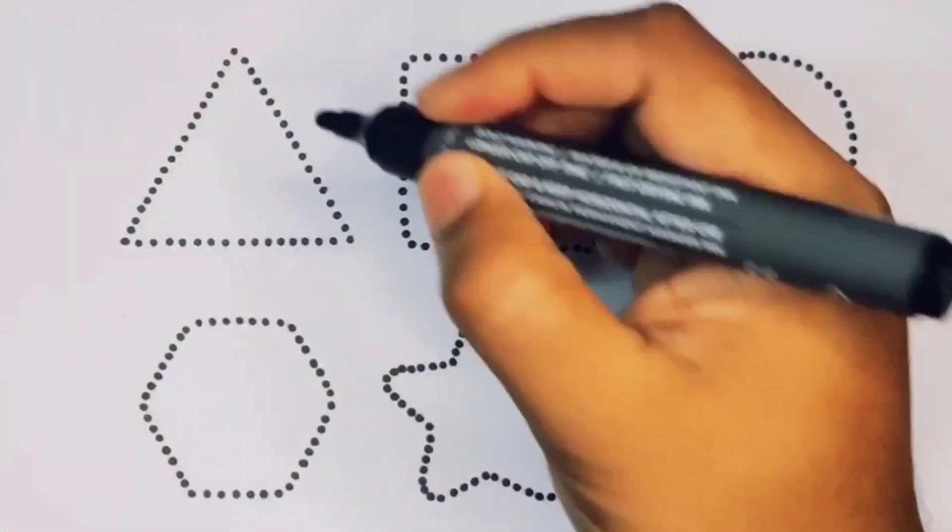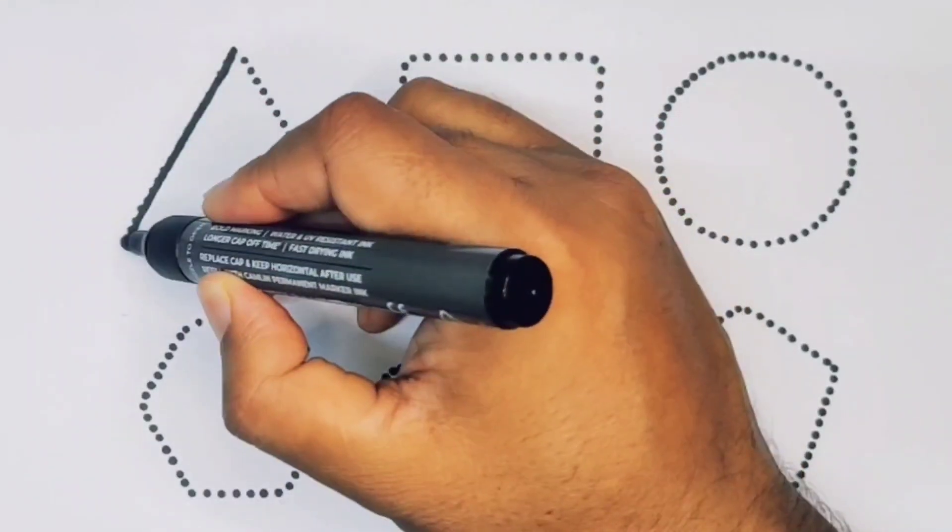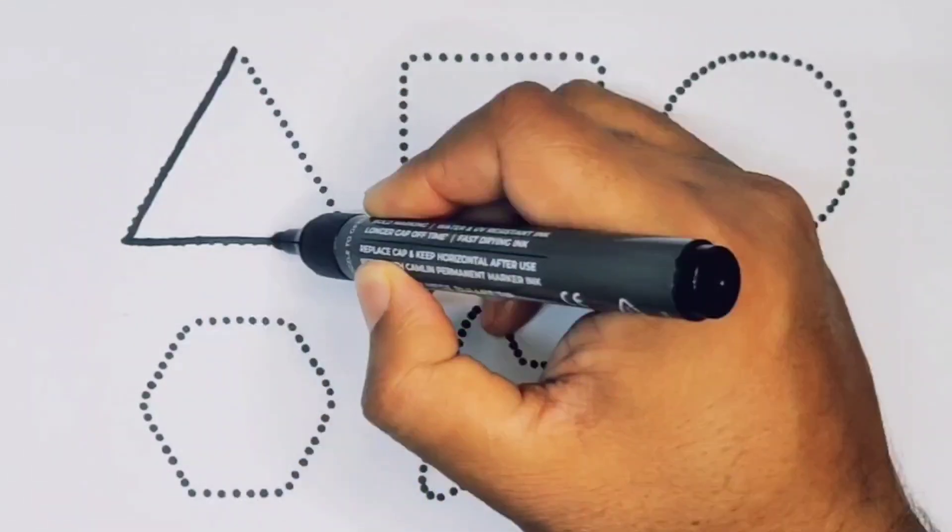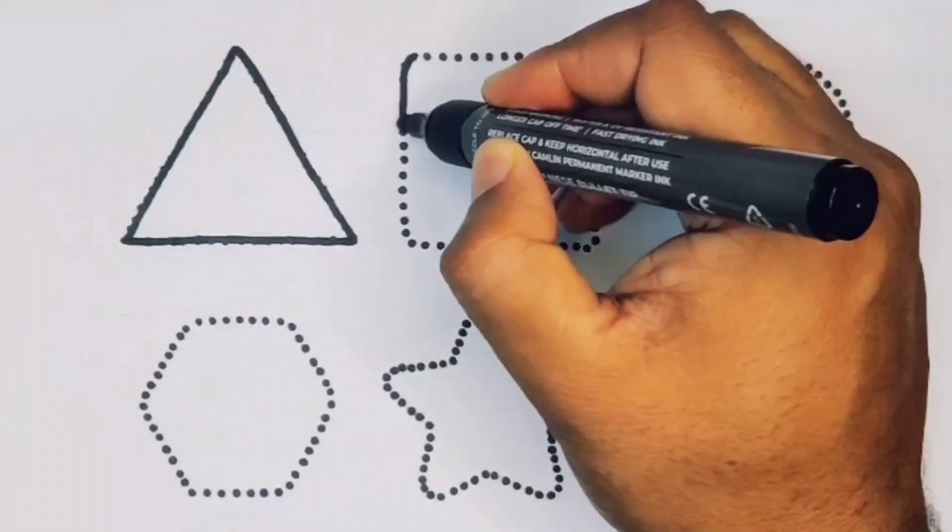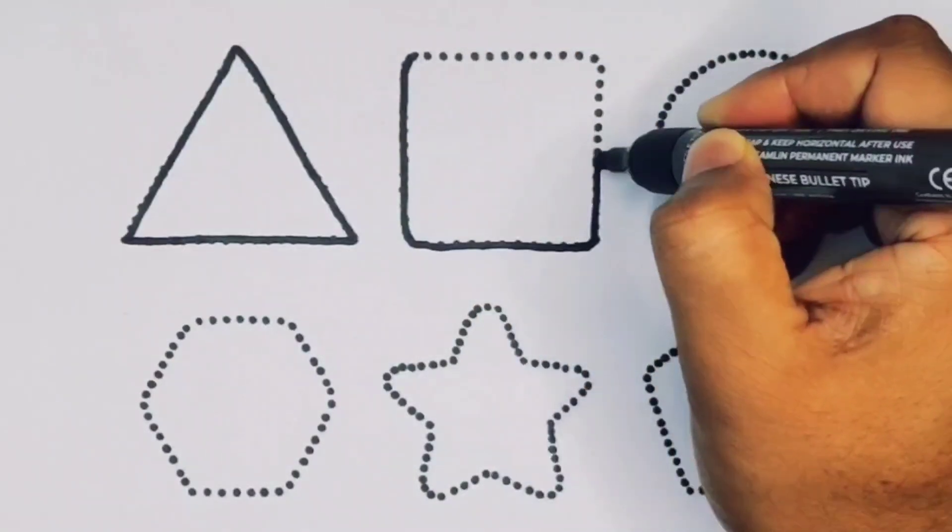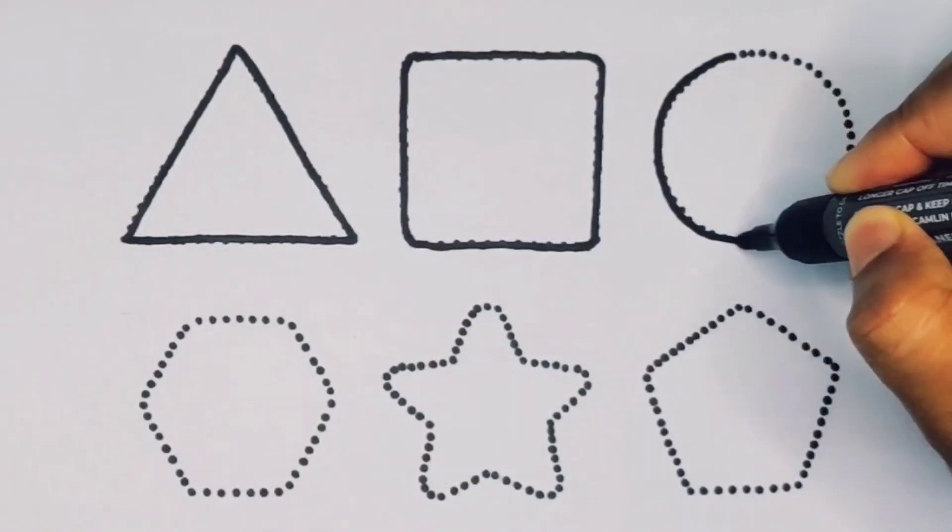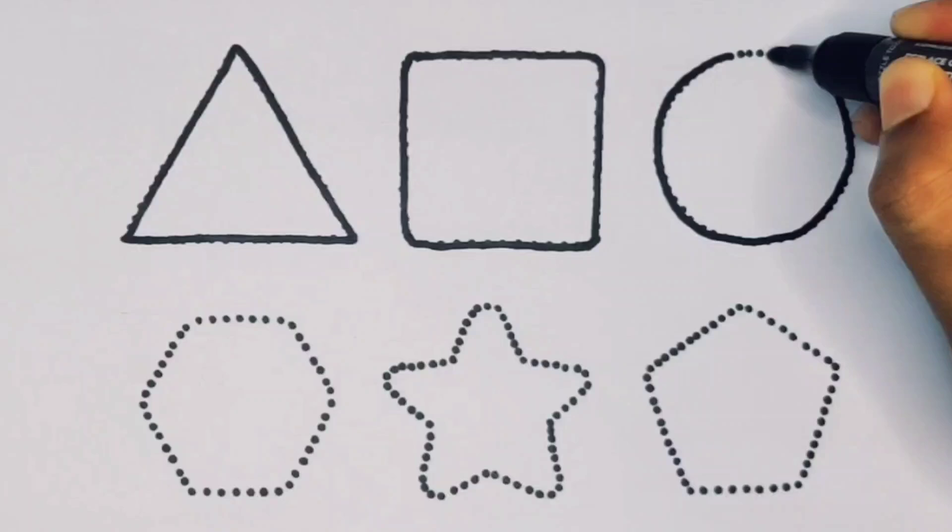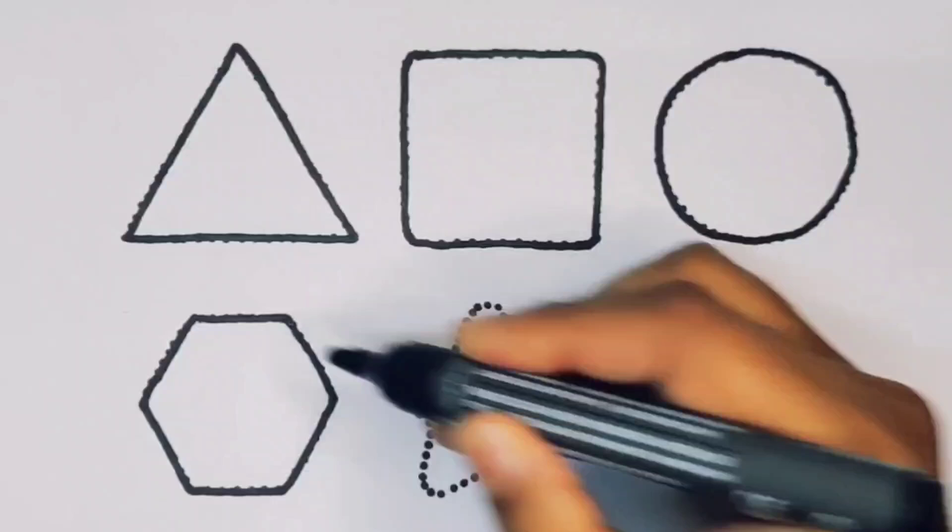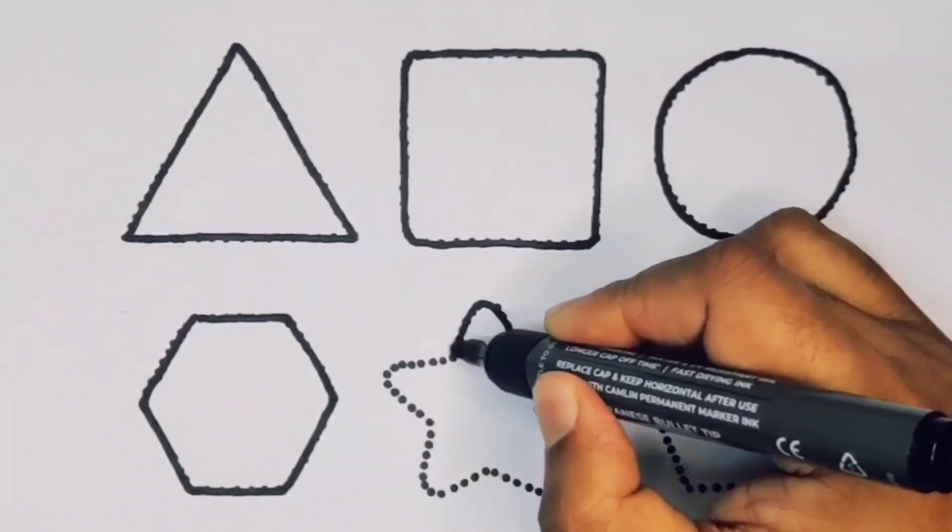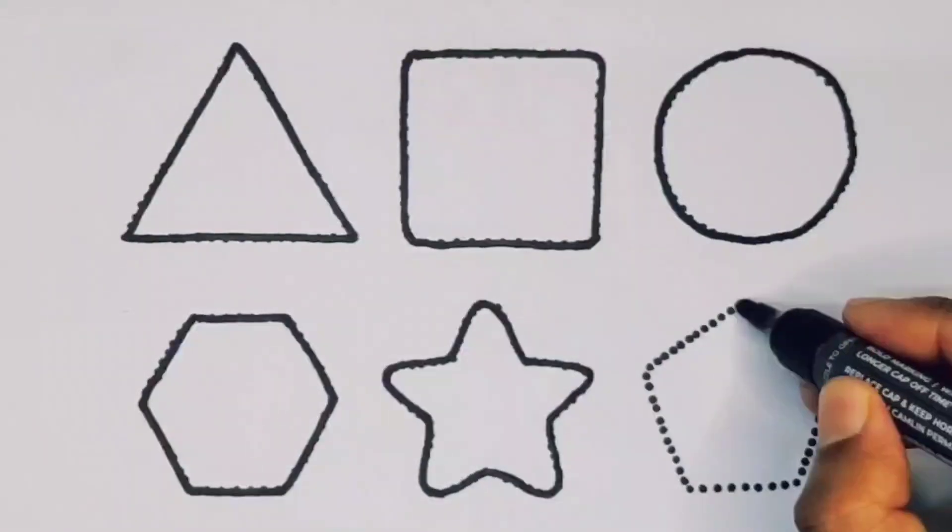First we're going to draw the shapes. Triangle, square, circle, hexagon, star, pentagon.